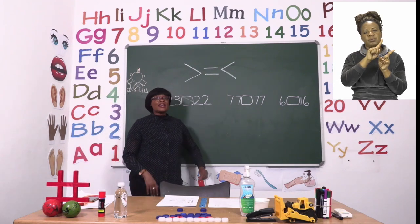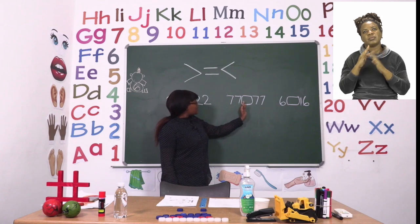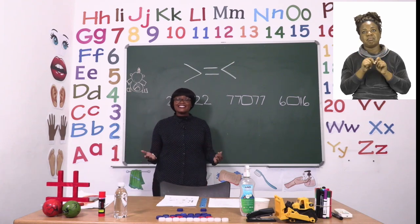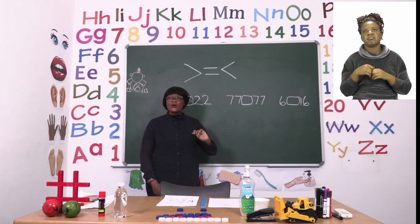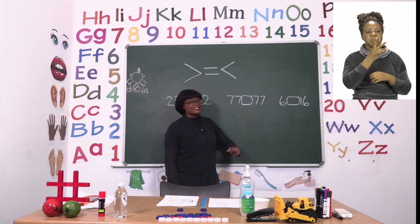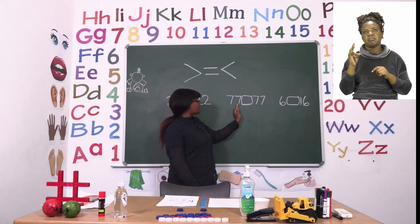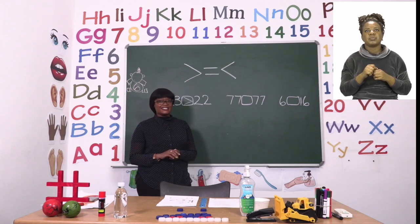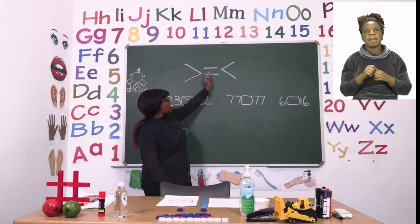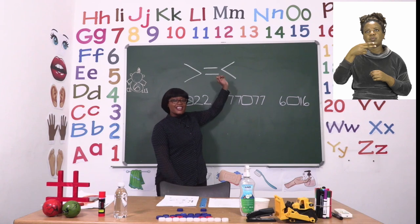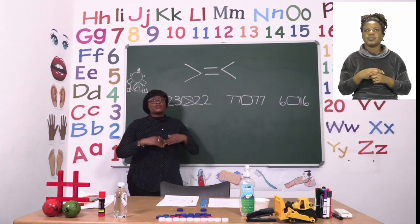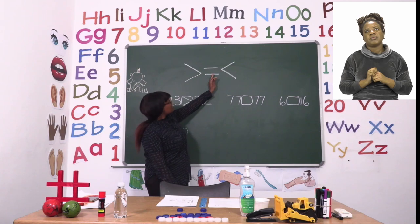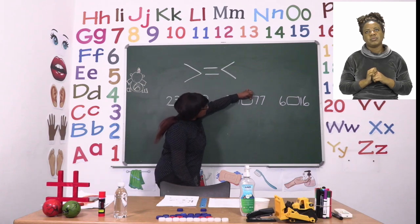Let's try the next one. We have the number 77 and 77. Oh no! Can you see what I see? It looks like it's the same number and that's true. So what do we do now? Well that is very easy. Instead of telling the hungry crocodile to eat one of them, because he's very greedy, he's going to eat both of them. And how do we show that? By putting the equal sign.